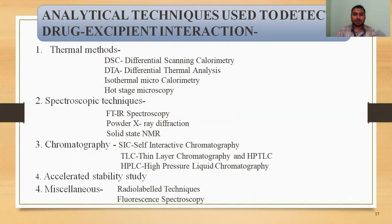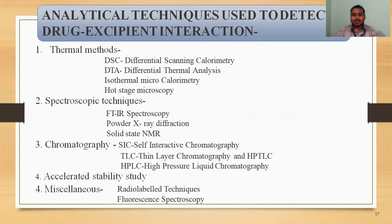In the thermal method we are using DSC — Differential Scanning Calorimetry — and DTA — Differential Thermal Analysis — isothermal microcalorimetry, and hot stage microscopy. In spectroscopic techniques: FTIR spectroscopy, powder X-ray diffraction, and solid-state NMR. In chromatography: SIC (self-interactive chromatography), TLC, HPTLC, and HPLC. For analytical purposes, we give primary importance to DSC, DTA, HPLC, and FTIR.